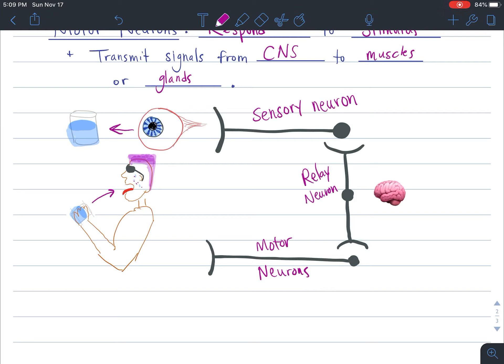So you can see that the signal is sent from our eye down the sensory neuron to our brain in the relay neuron. The relay neuron tells the information to our motor neuron, and our motor neuron then allows us to get a drink. And that is how our neurons can work together to talk to one another and allow us to respond to stimuli that are in our environment.